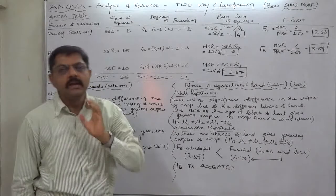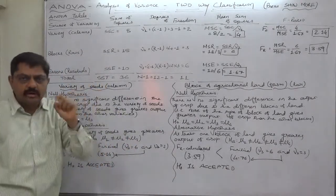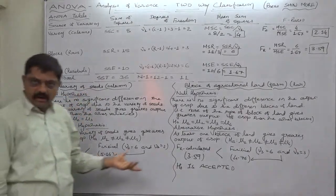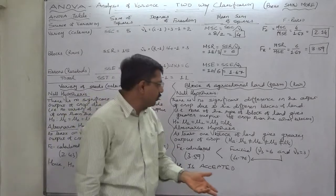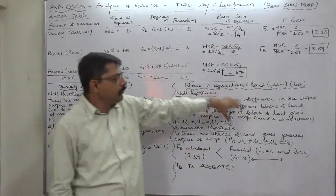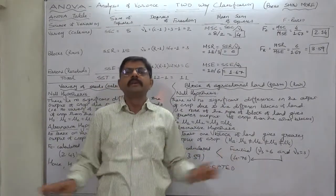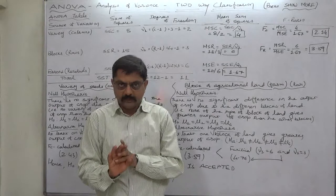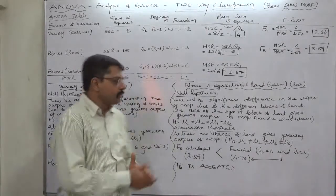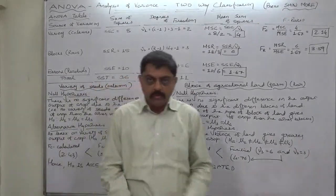We cannot reject the null hypothesis, so it becomes our final conclusion: none of the types of block of land gives greater output of crop than the other blocks. That means on whatever block of land out of these four we sow the seeds, there will not be much difference in output. Broadly, any one kind of seed can be sown on any one kind of block — the output will be more or less the same.